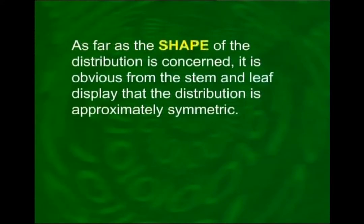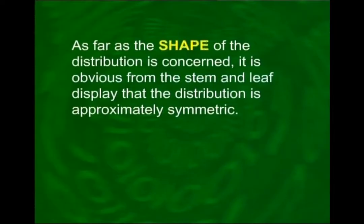We can draw many conclusions from this stem and leaf plot. The smallest number of spots purchased is 88 and the largest is 156. Two dealers purchased less than 90 spots and three purchased 150 or more. The concentration of the number of spots is between 110 and 130, with nine dealers purchasing between 110 and 119 spots and eight dealers purchasing between 120 and 129 spots. The distribution is approximately symmetric.